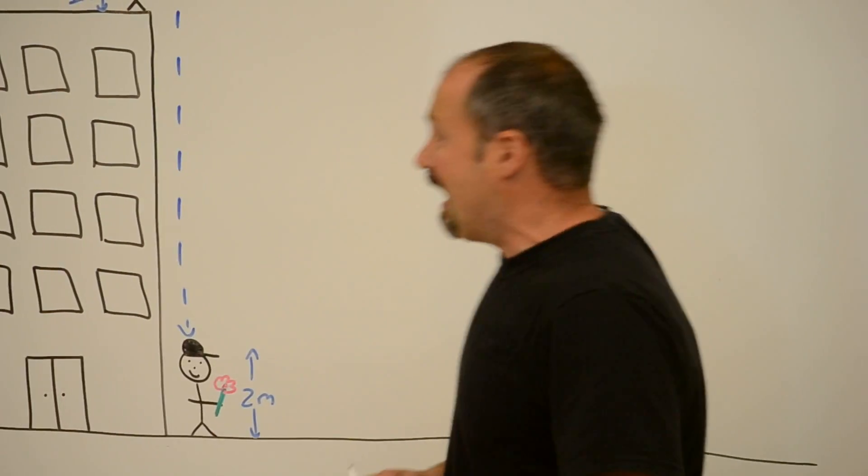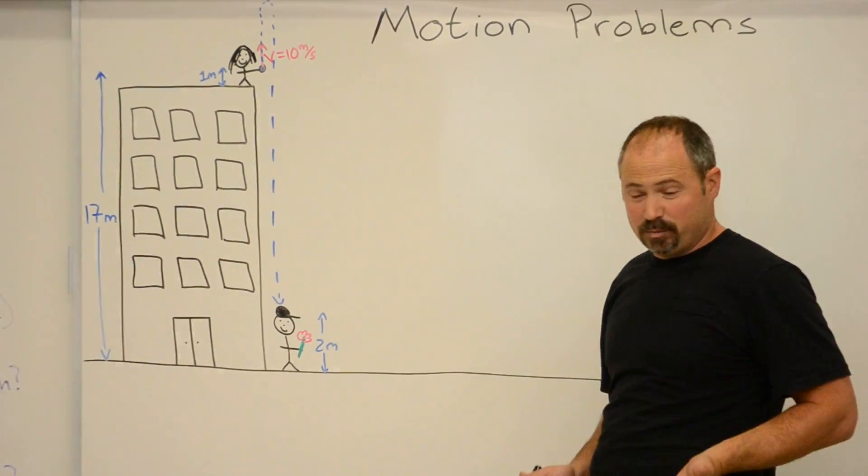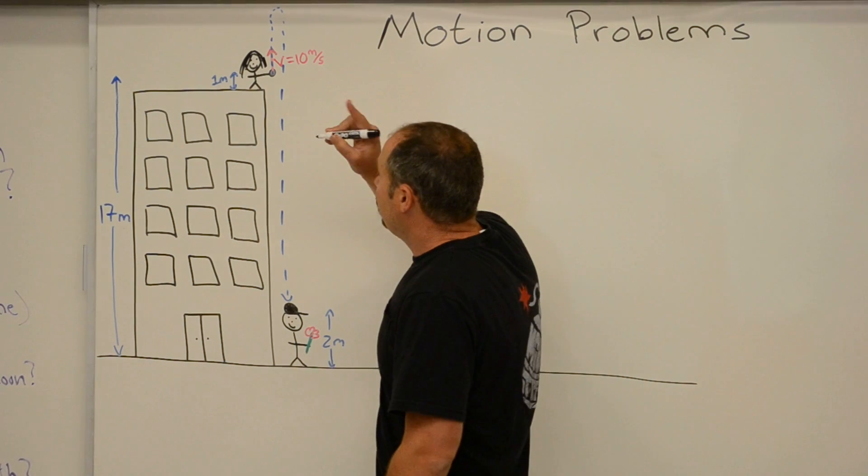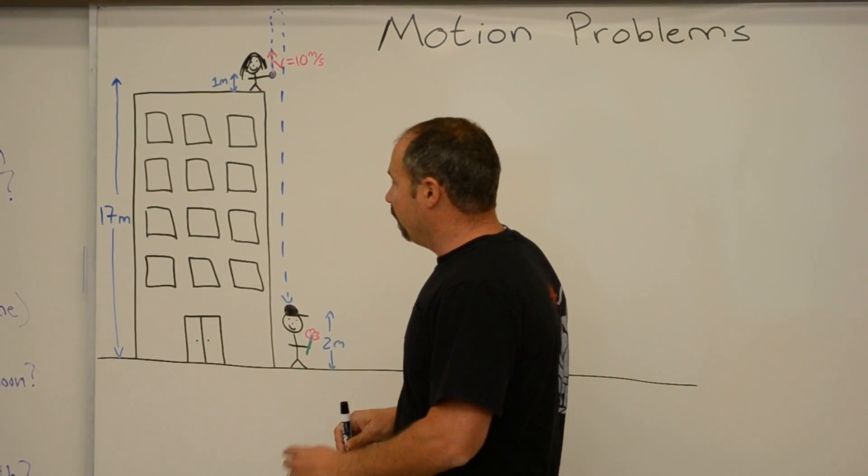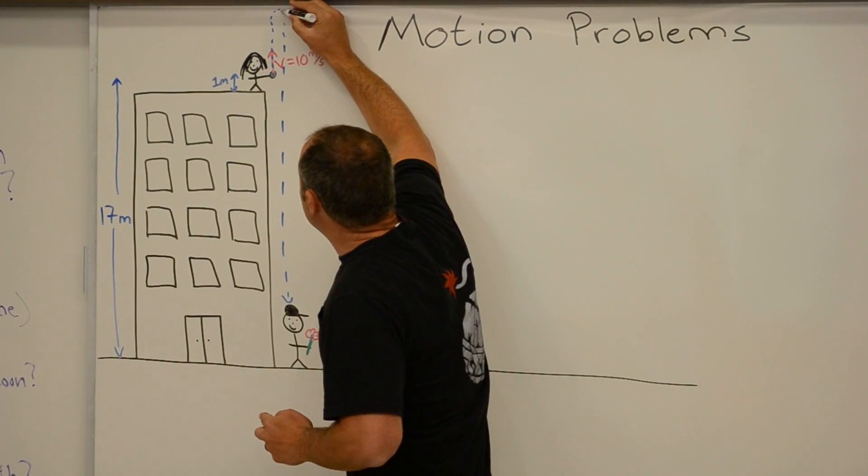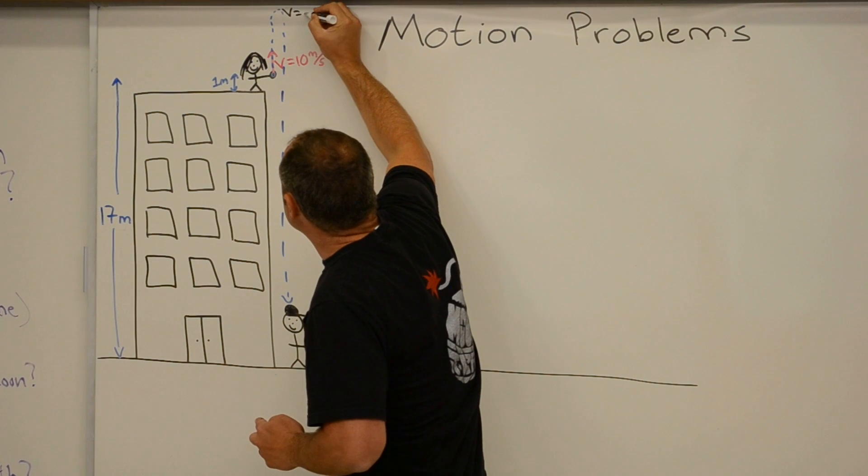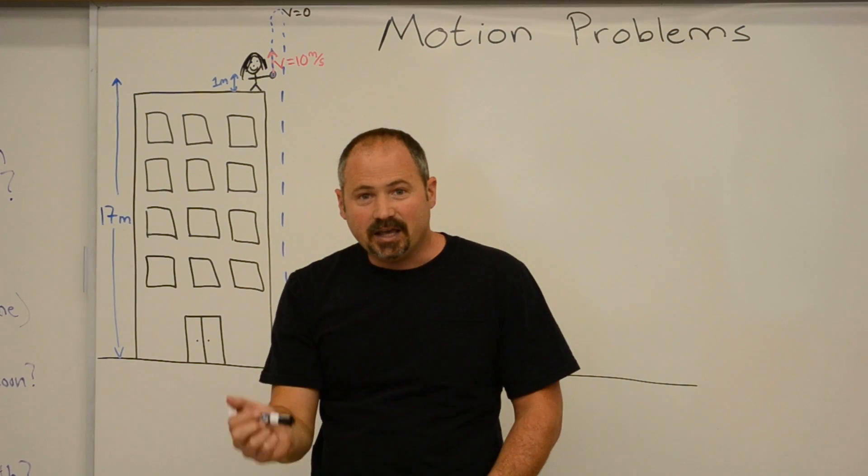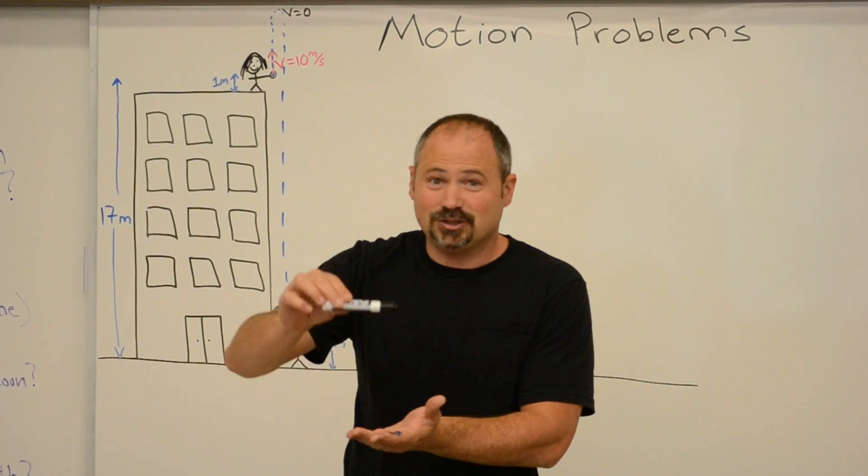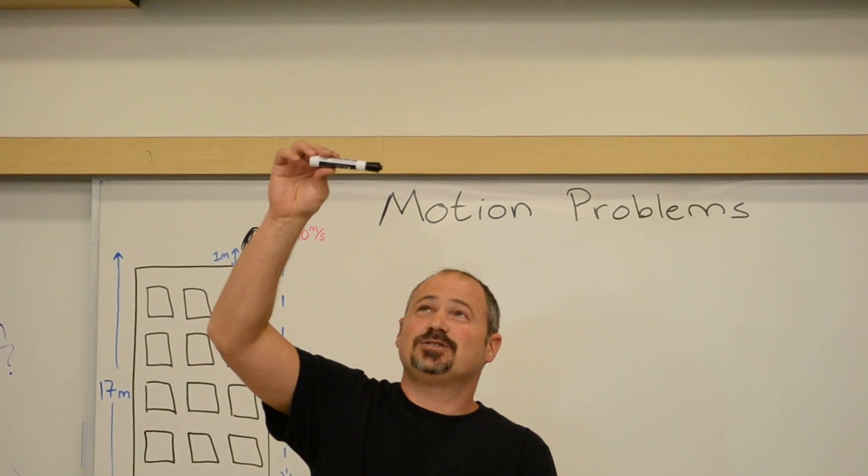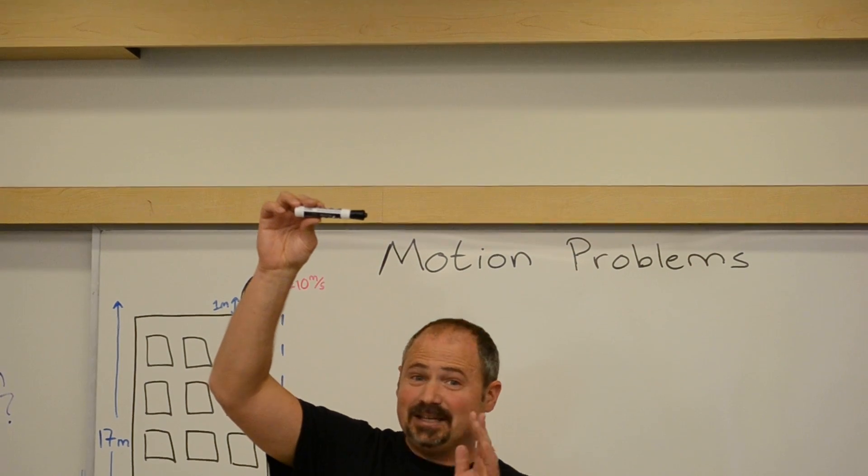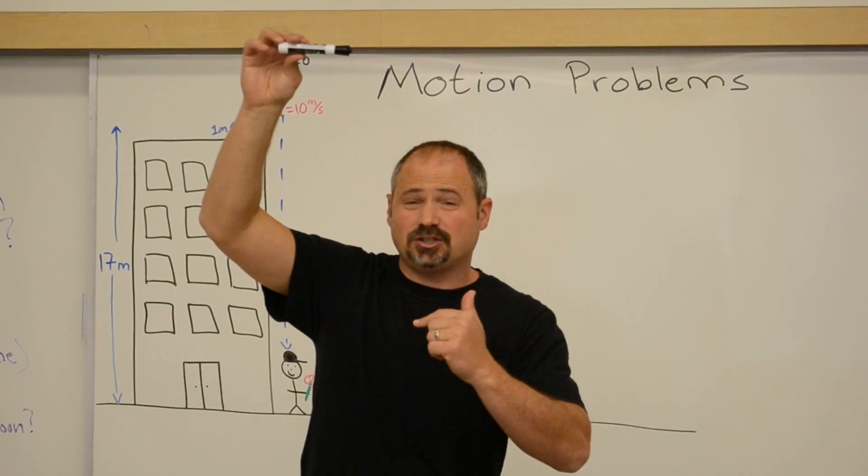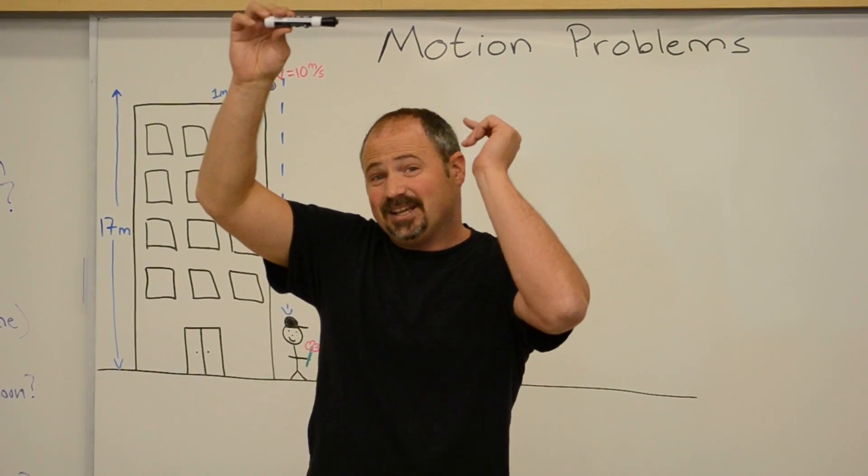So first, how high does the balloon go before coming down? Well, very important to remember that at its highest point, the velocity is zero. How do I know that? Well, I throw the marker up in the air. It goes, now watch in slow motion. Stops for an instant. It has to in order to change directions. And at that instant, its velocity is zero.